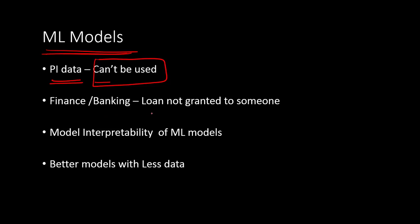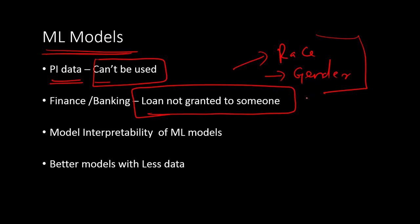For example, in finance and banking, especially the fintech companies, they cannot use PII data to grant somebody a loan. Somebody's race, somebody's gender cannot be a feature in your model. That's restricted. Your models will go under regulatory review. It has to pass the regulatory framework before it gets used.